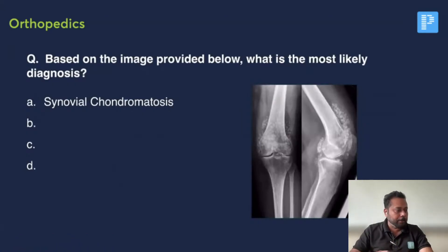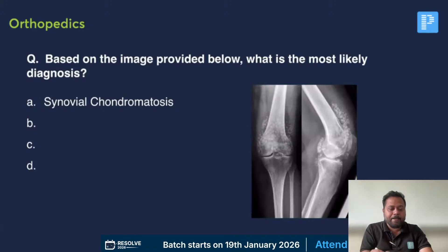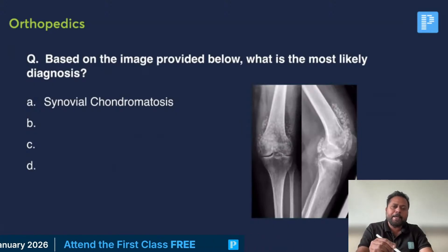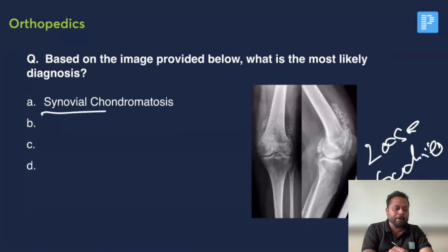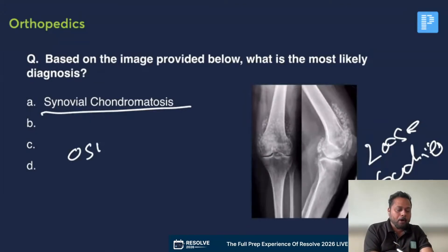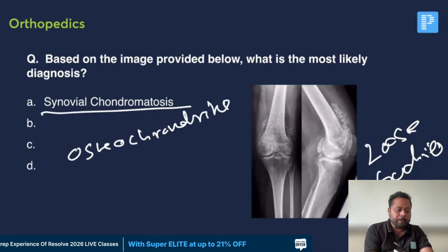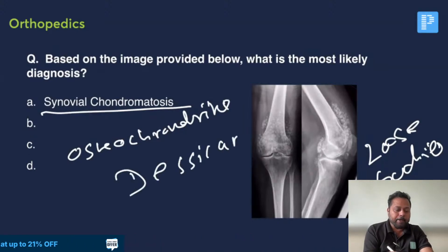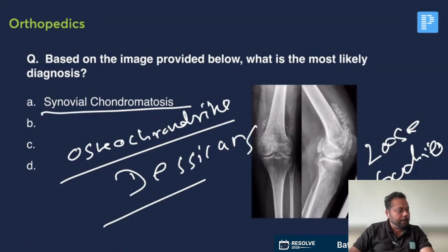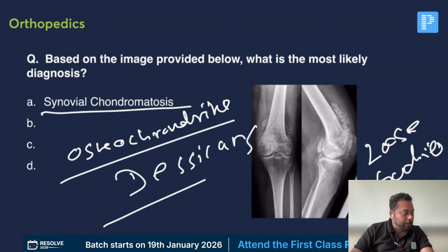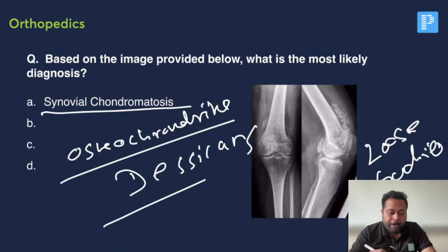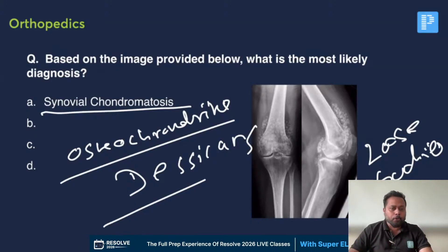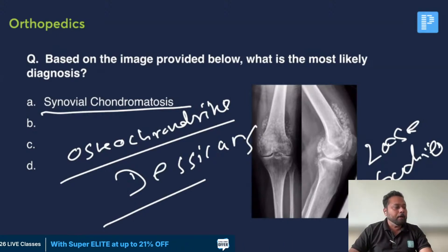Based on the X-ray — a classical image — when you zoom in, multiple small uniform-sized loose bodies are seen. This should be a case of synovial chondromatosis. The loose bodies represent osteochondritis dissecans, and the cause is synovial chondromatosis. Someone asked if it could be pseudogout; the other option was gout or pseudogout, but given the X-ray showing multiple small uniform-sized loose bodies, it should be osteochondritis dissecans caused by synovial chondromatosis.